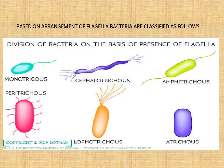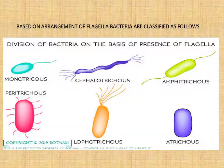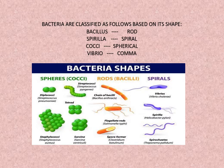Based on arrangement of flagella, bacteria are classified as follows: Monotrichous — single flagella at one end; Lophotrichous — a tuft of flagella at one end; Amphitrichous — single flagella at two ends; Peritrichous — flagella all over the body. Based on shape, bacteria are classified as Bacillus (rod), Spirilla (spiral), and Coccus (spherical).